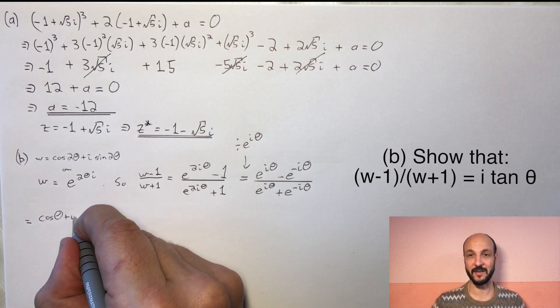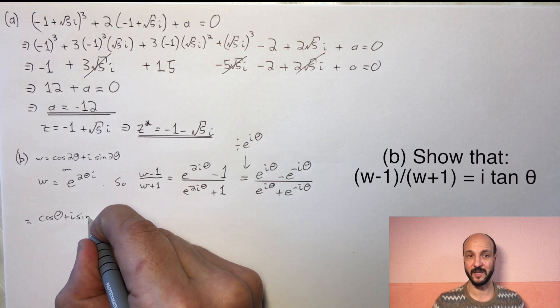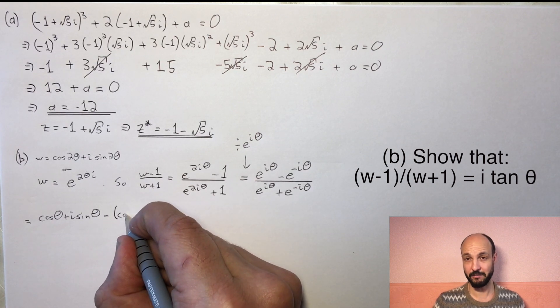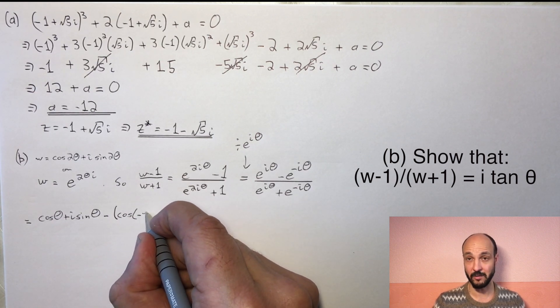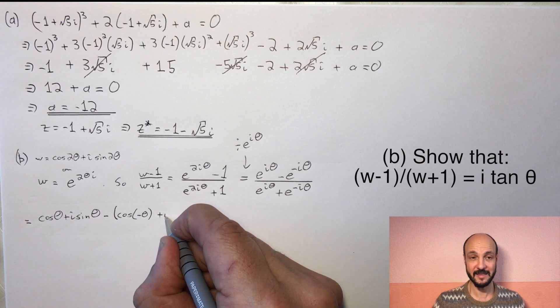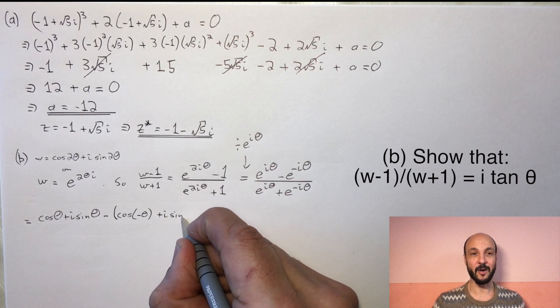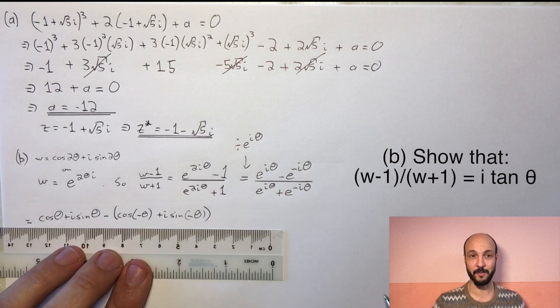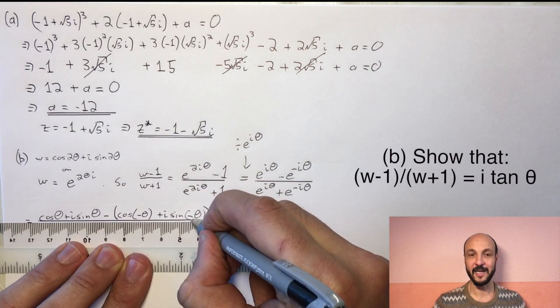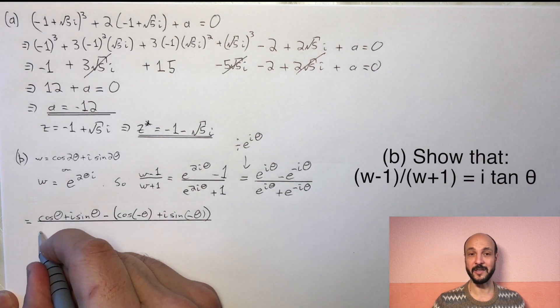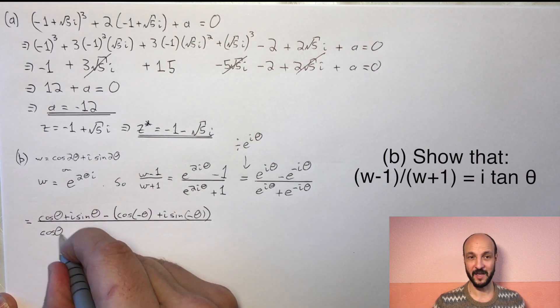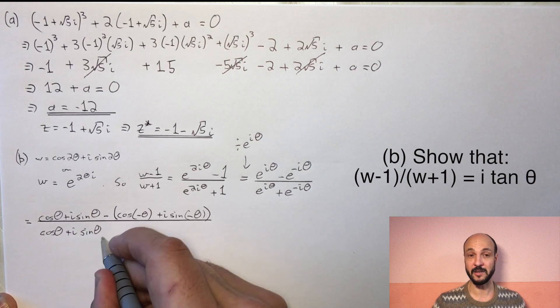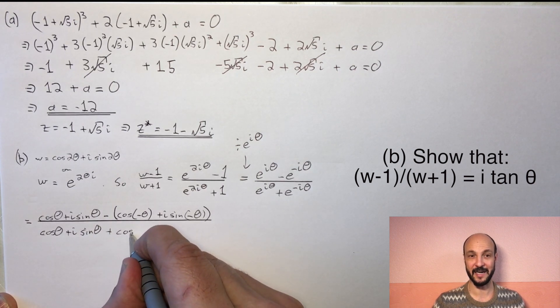Now it's much easier to transfer to trigonometric form now because we don't have our two thetas, we've just got theta. Our e^(iθ) becomes cos θ + i sin θ in trigonometric form, and we're subtracting cos(-θ) + i sin(-θ). And on the bottom, we've got cos θ + i sin θ + cos(-θ) + i sin(-θ).